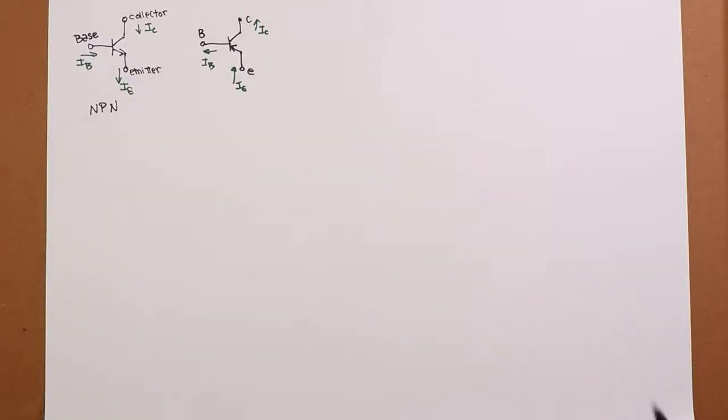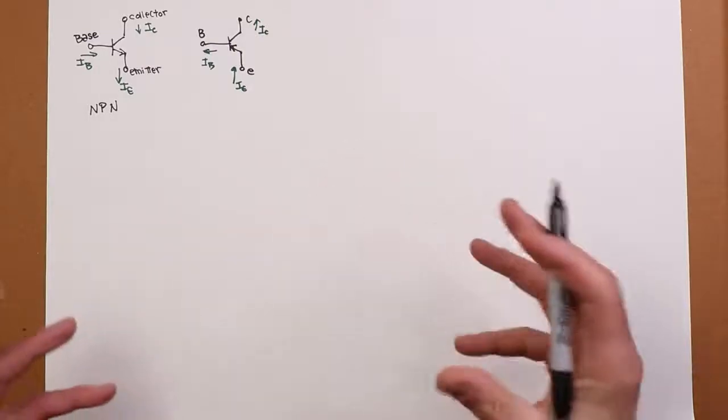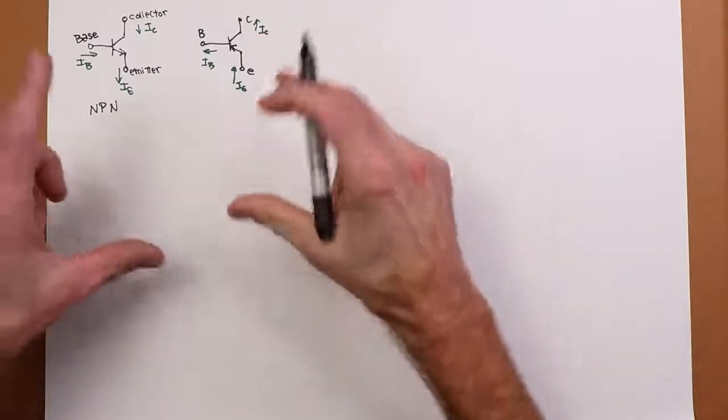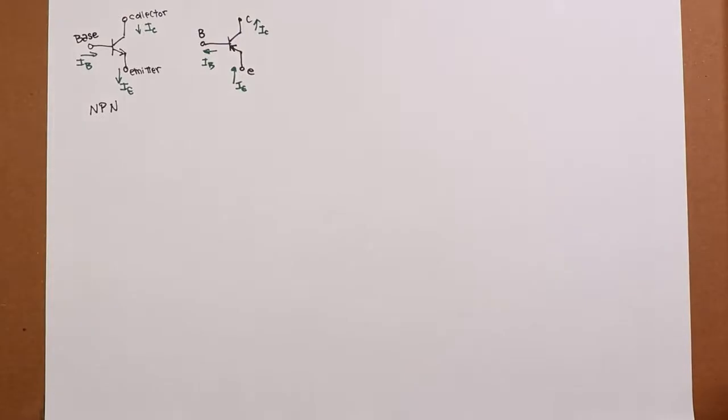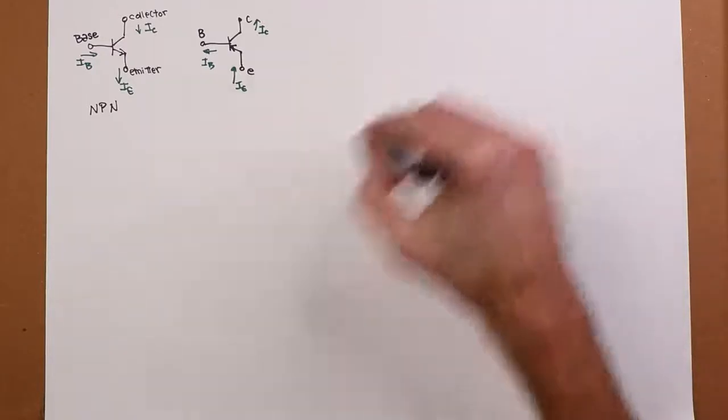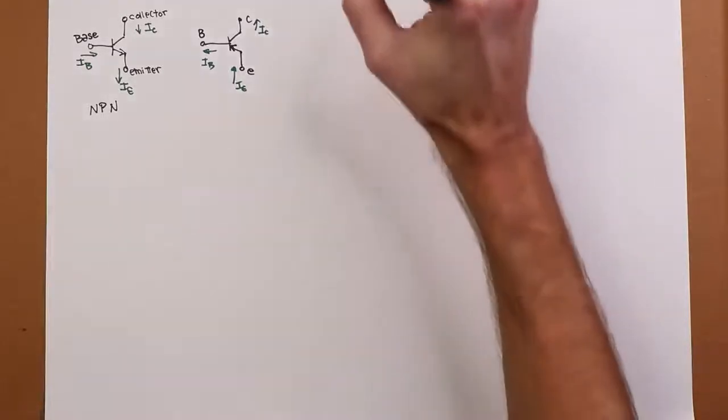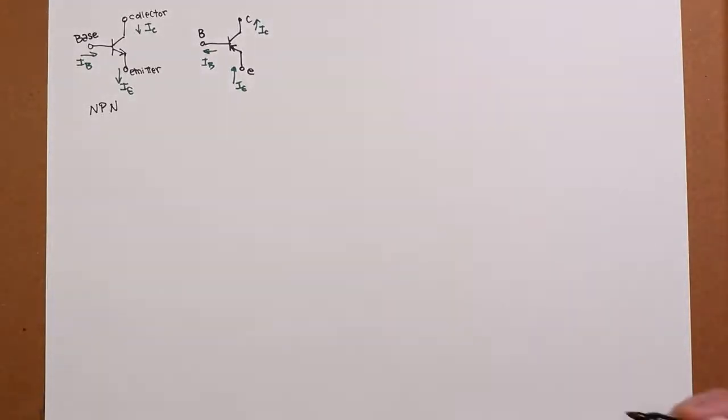So what we want to look at today is what happens when we hook this up and we have various voltages and currents coursing through the device. What kind of characteristics do we see? Now, this is a three-terminal device, so it's a little bit more complex than a simple diode.